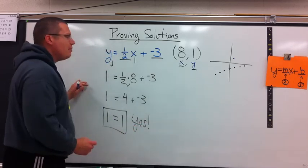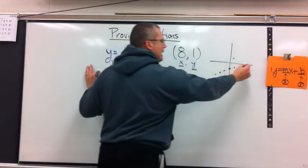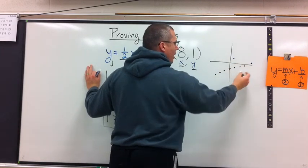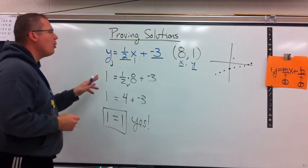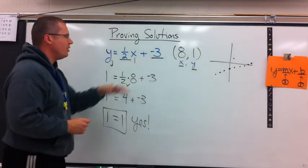So what does this mean? It means the point 8, 1 is part of my line. 8 over 1 up should be on my line. This is proving if an ordered pair counts as a solution.